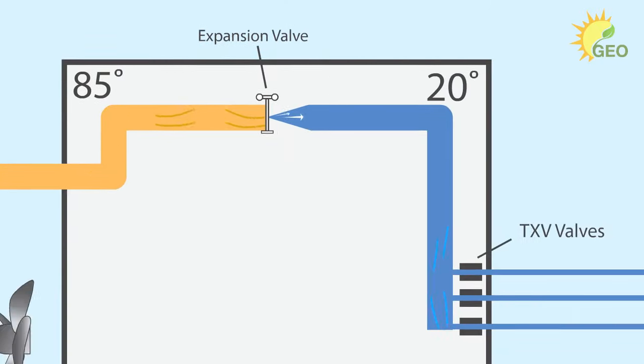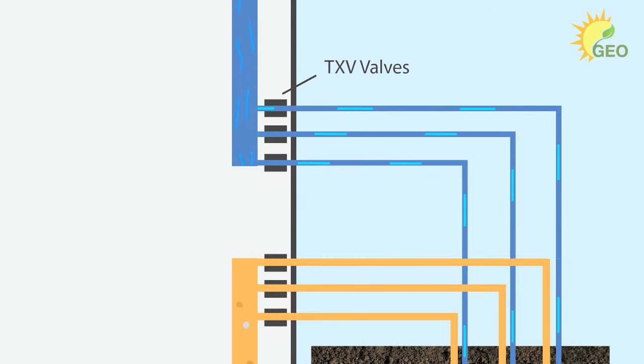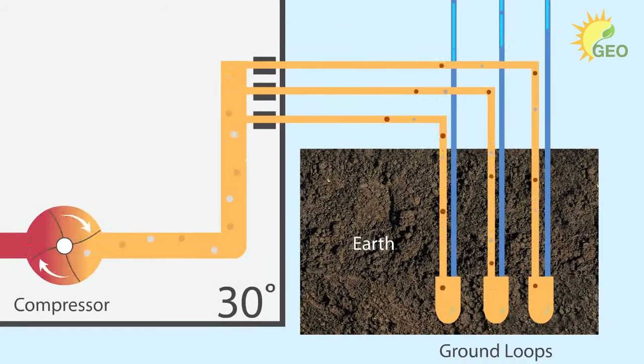The air blowing across this coil absorbs the heat energy and distributes it throughout the home. As the refrigerant leaves the coil, it condenses back to its liquid state and moves toward the expansion valve at 85 degrees. The expansion valve is basically like a dam with a small hole. When the refrigerant passes through the expansion valve, the pressure rapidly decreases and the temperature falls to 20 degrees.